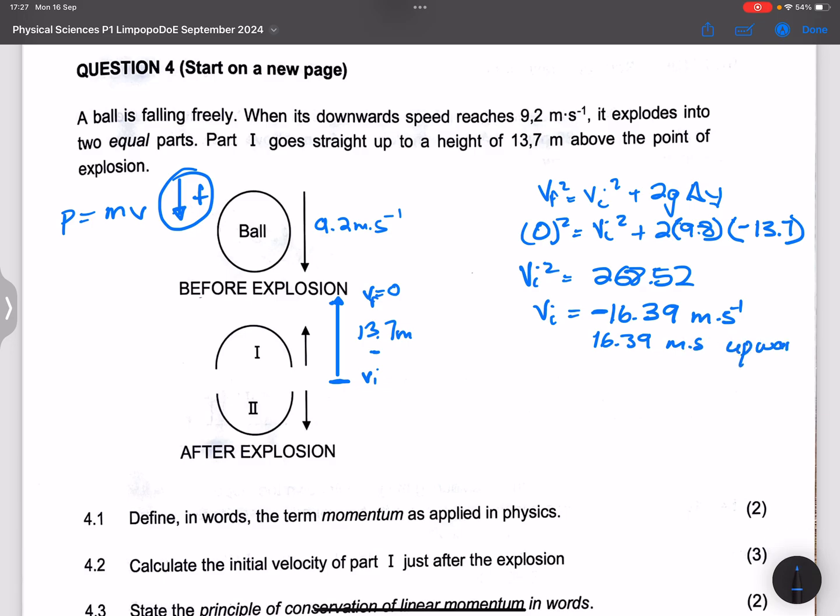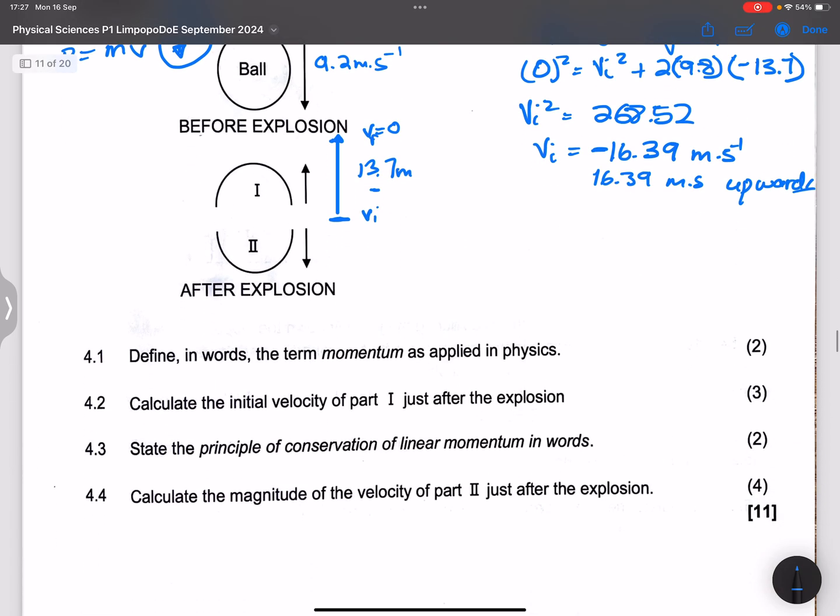16.39 meters per second, or we can say 16.39 meters per second upwards. Now they say state the principle of conservation of linear momentum. So we know in an isolated system the momentum before collision is equal to momentum after, or you can say in an isolated system the total linear momentum is conserved.